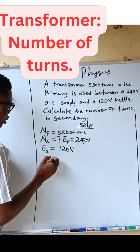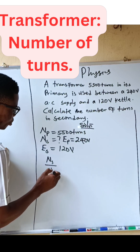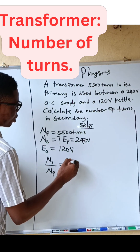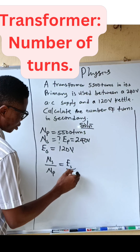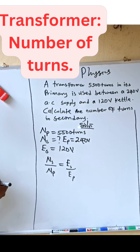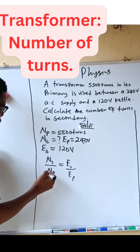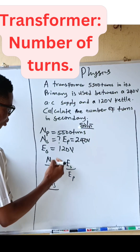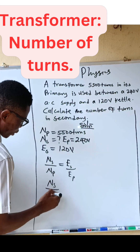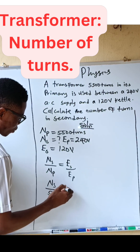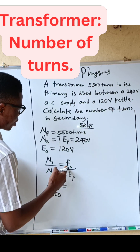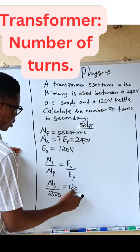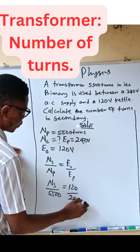We are going to apply the transformer formula: Ns divided by Np equals Vs divided by Vp. Plugging in the values, Ns divided by Np — which is five thousand five hundred turns — equals Vs, which is 120 volts, divided by Vp, which is 240 volts.